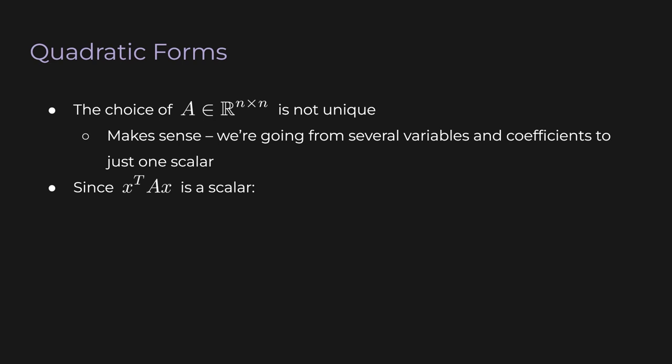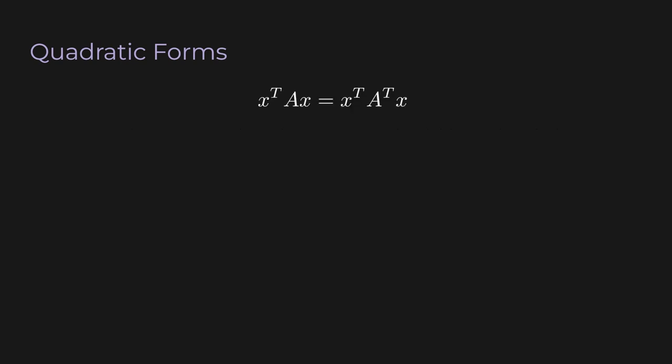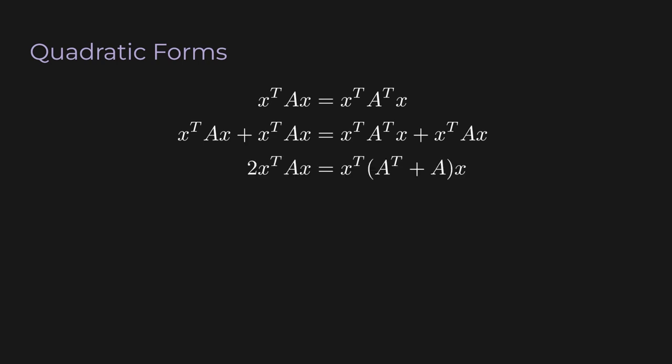Since x transpose Ax is a scalar, the transpose of the whole product is equal to itself. If we distribute the transpose, the transposes on the last x cancel. Now we'll use a trick: we add x transpose Ax to both sides. The left-hand side becomes 2x transpose Ax, and we can simplify the right-hand side using the distributive property. Then we divide both sides by 2.